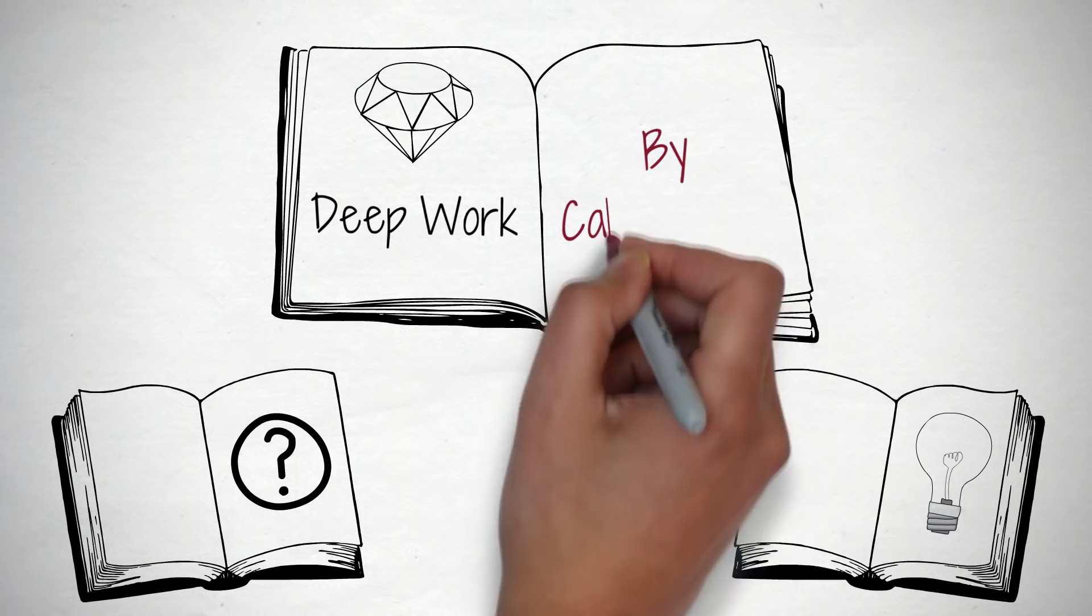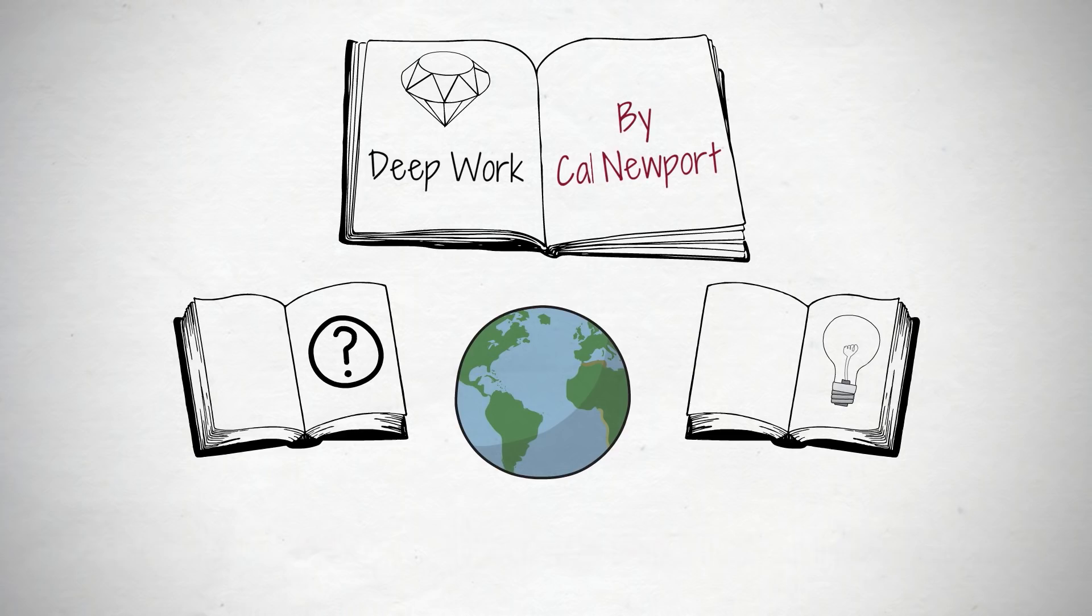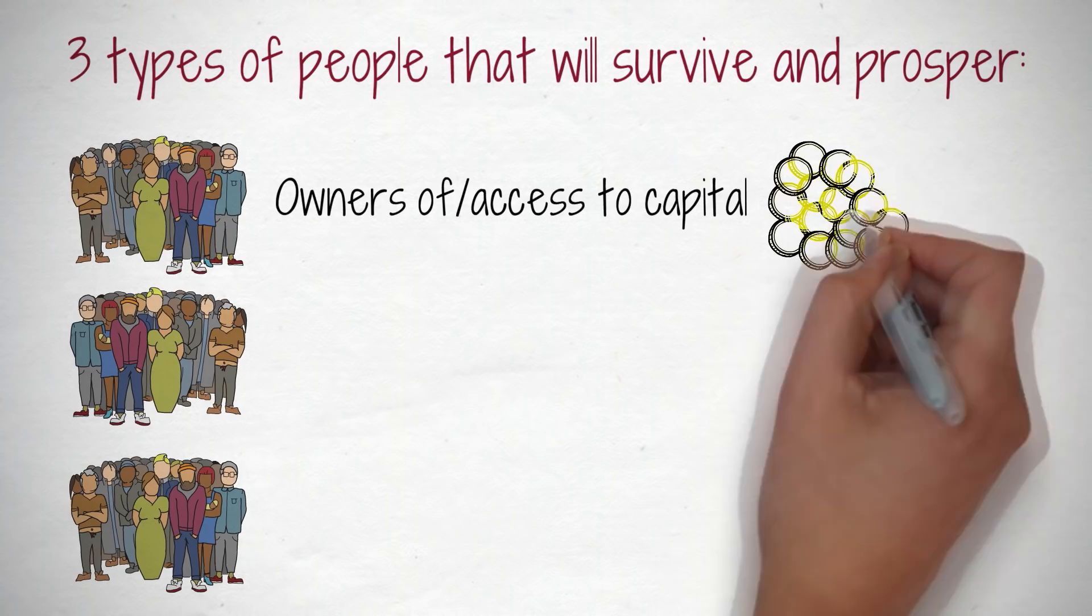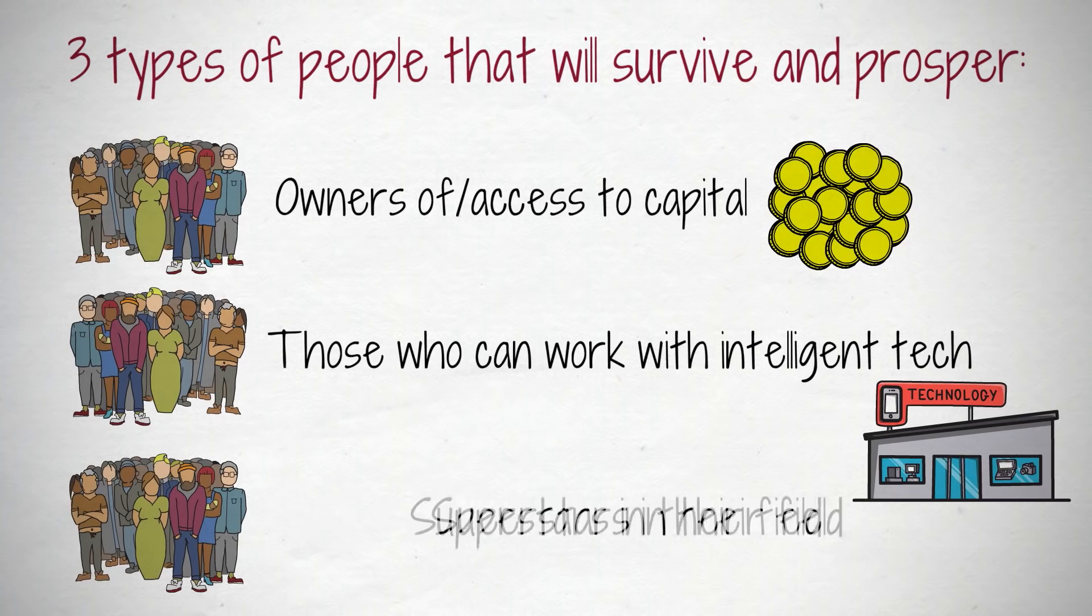As the world advances, three kinds of people will survive and prosper. Owners of capital or people with access to it. Those who can work with intelligent machines and technology — superstars in their field of work.